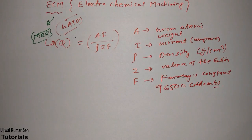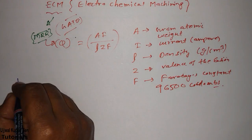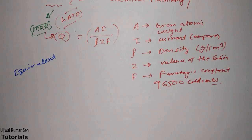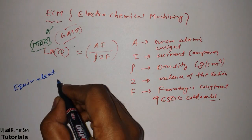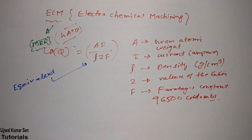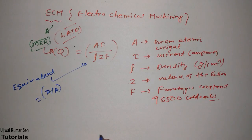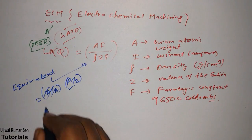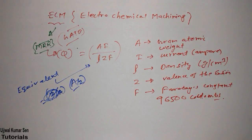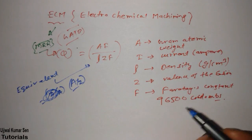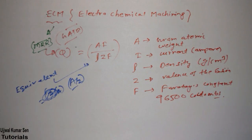Another important concept is equivalent weight. From the MRR formula, we can derive that A divided by Z is known as equivalent weight. Here A is gram atomic weight and Z is the valence of the cation. Many books refer to Z as valency, but valence of the cation is the correct term.